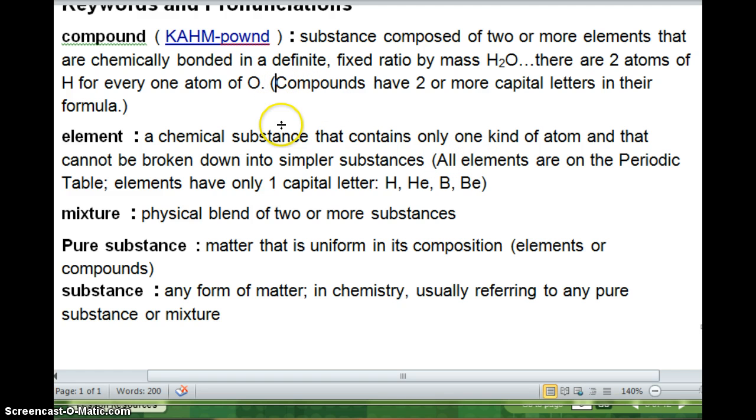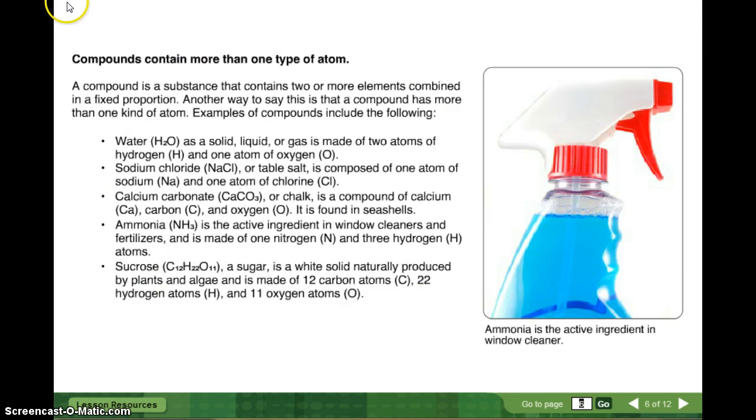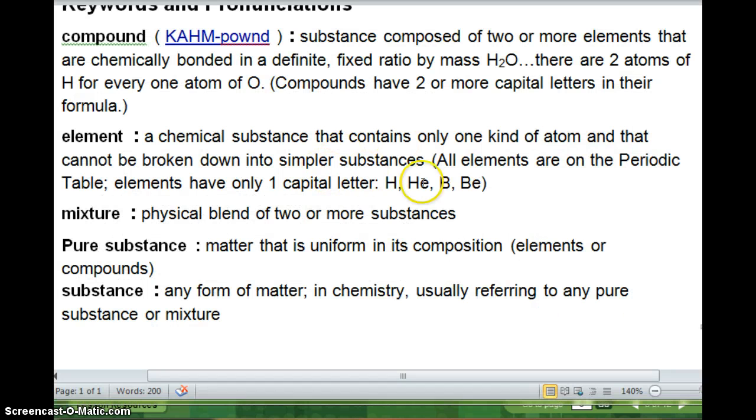Compounds have two or more capital letters in their formula. Again, for an example, H2O. Compounds contain more than one type of atom. A compound is a substance that contains two or more elements combined in a fixed proportion. Another way to say this is that a compound has more than one kind of atom. Examples of compounds include the following. Water, H2O, as a solid, liquid, or gas, is made of two atoms of hydrogen, H, and one atom of oxygen, O. Sodium chloride, or table salt, is composed of one atom of sodium, Na, and one atom of chlorine, Cl. Now, you should know this. You should know sodium chloride is NaCl, and you should know that the common name for that is table salt. So that is definitely something that we're going to be using in our online lab. We're going to be talking about it a lot. So you should know water is H2O, table salt is NaCl, or sodium chloride.